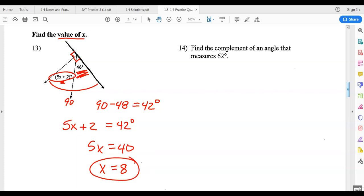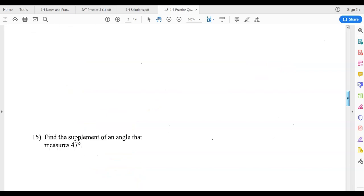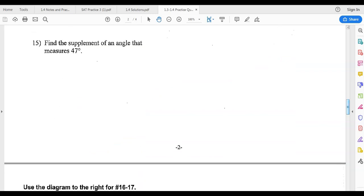14 is just a vocabulary problem. Complement means they add up to 90. So 62 plus somebody equals 90. Subtract, and you will find out that 28 degrees is the complement of 62 degrees. Moving on down to number 15. Similar idea, but now we are finding the supplement. Supplement, so supplement is 180. So 47 plus the supplement has to come out to be 180. So again, it's a subtraction problem. Correct answer here is 133.